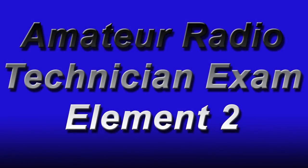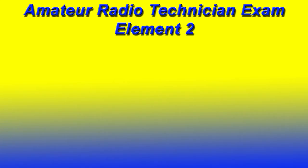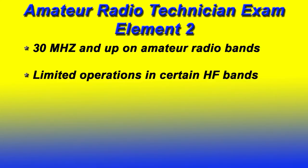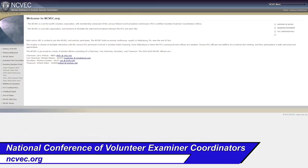Amateur radio technician exam, element two. What do you get when you become a technician ham radio operator? You get 30 megahertz and up on the amateur radio band, and you also get some limited operation on the HF bands. The big question is: who makes up the test, and what's on the test?